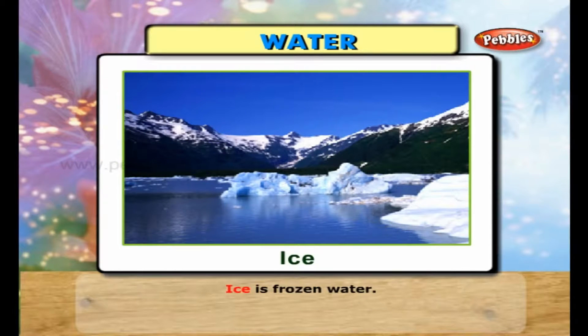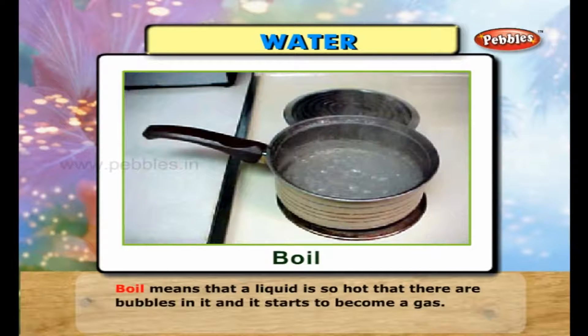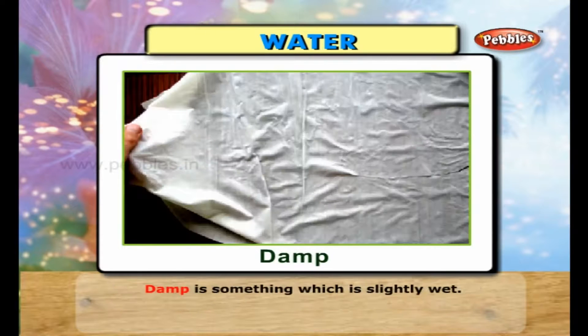Rapids are part of a river where the water moves extremely quickly over rocks and is usually dangerous. Ice is frozen water. Boil means that a liquid is so hot that there are bubbles in it and it starts to become a gas. Damp is something which is slightly wet.